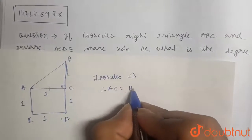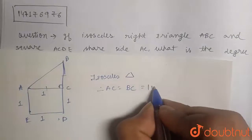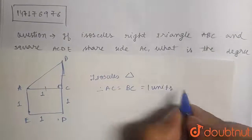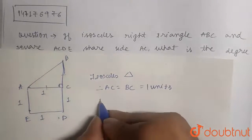So AC will be equal to BC. So BC is equal to one unit. Now what is the length of BD?